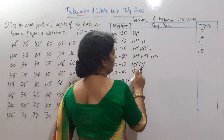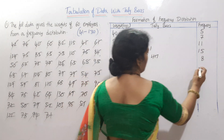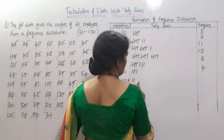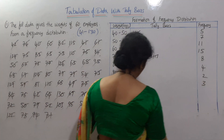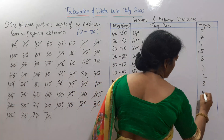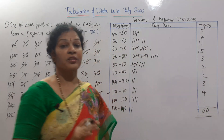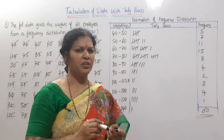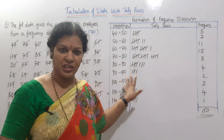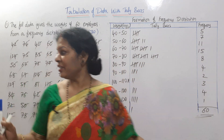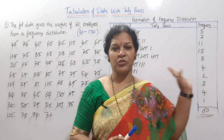The tally for 70 to 80 is 5 plus 3, making it 8. Then the remaining intervals give counts of 4, 2, 3, 4, and 1. The grand total is 60. If your total is 60, you are correct — there is no miss.